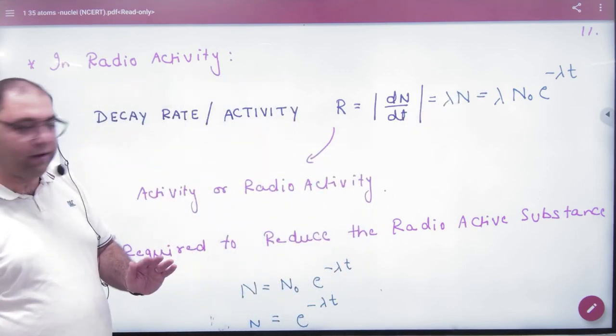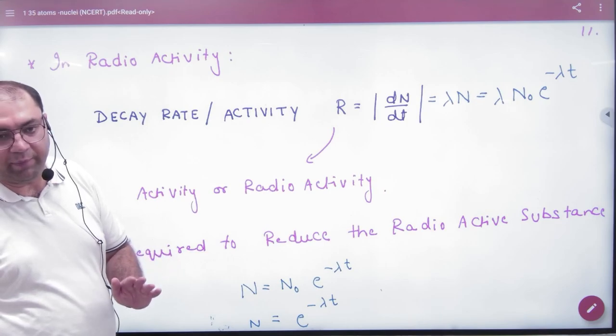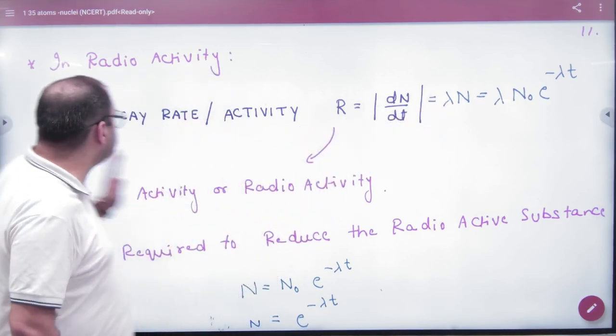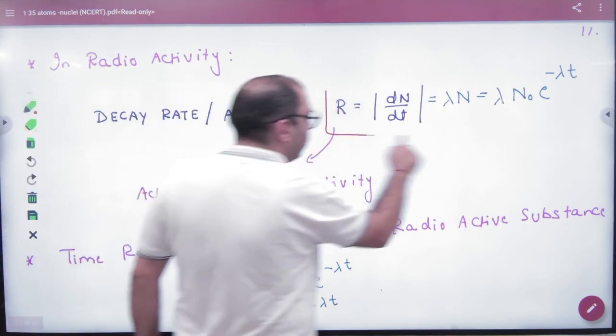So when your numerical comes for activity or radioactivity, what would be the value of R? Lambda N. This formula is the most useful formula.